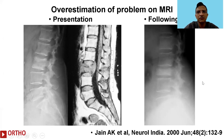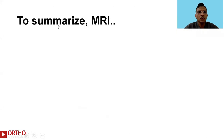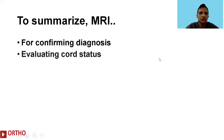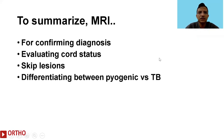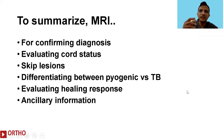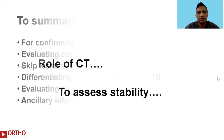To summarize: MRI is useful for confirming diagnosis, evaluating cord status, identifying skip lesions, differentiating pyogenic versus tuberculous lesions, and evaluating the healing response. It may also provide ancillary information such as the status of the vertebral artery and other details useful in planning treatment.